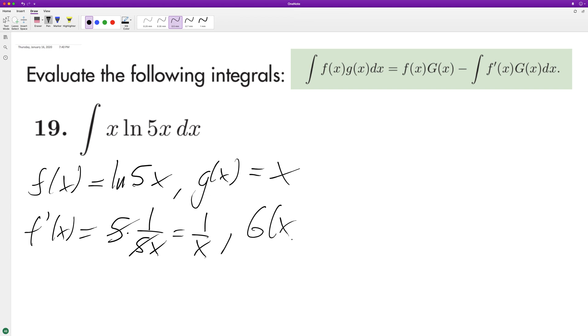Okay, so plug and chug. So f(x), natural log of 5x, times g(x), x squared over 2, minus the integral of f'(x), which is 1 over x, times x squared over 2. The x's cancel, this just becomes x over 2.